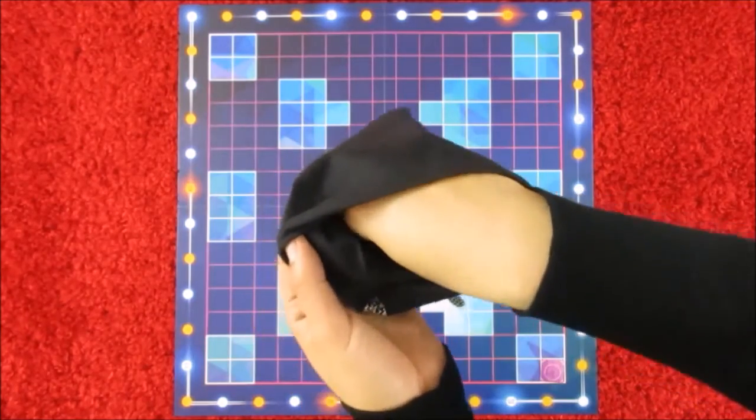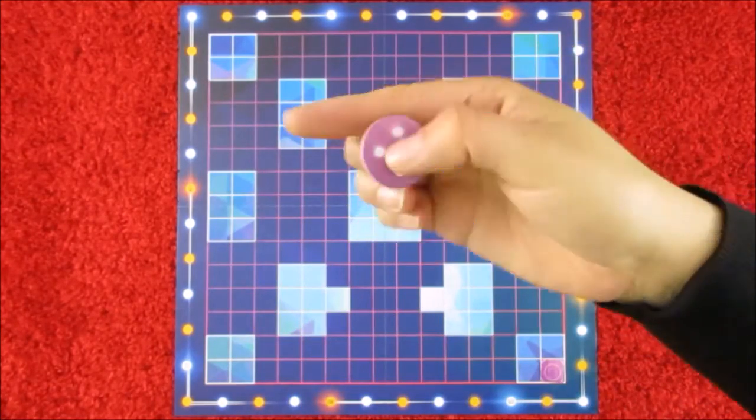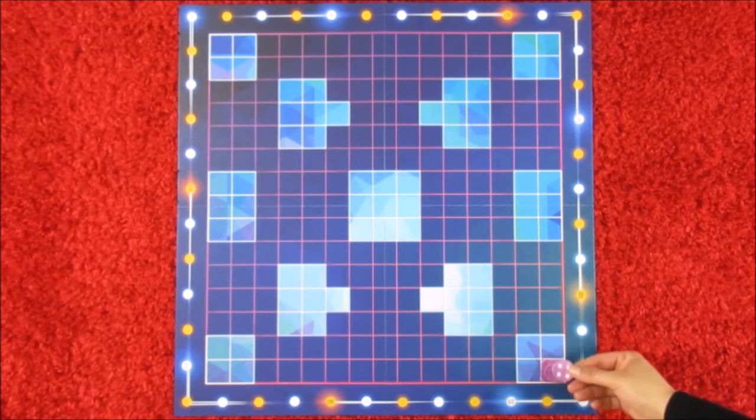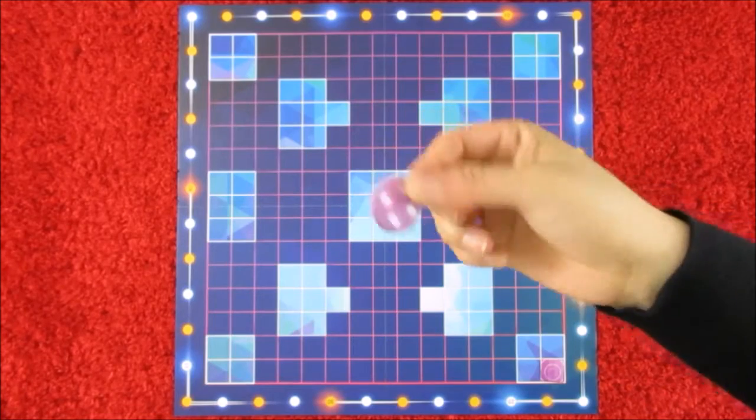The first thing the players will do is reach into their bag and pull out one token. Now this token will be placed on the corner, so the first player will decide which number they will place face up.